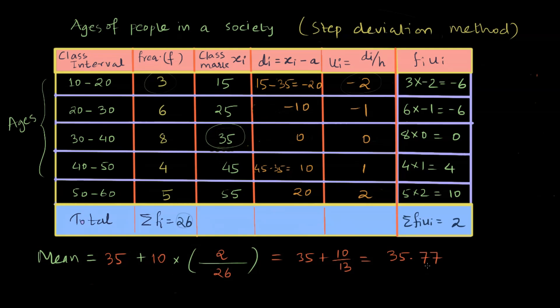So the mean in this case is 35.77. Note that whatever formula you use to calculate mean, whether direct method, assumed mean method, or step deviation method, the answer is going to be the same. Only when multiplication gets tougher in direct method, you use assumed mean method. And when multiplication gets tougher in assumed mean method, you may want to use step deviation method. These are just simpler methods to find a mean.